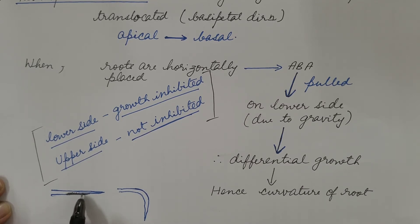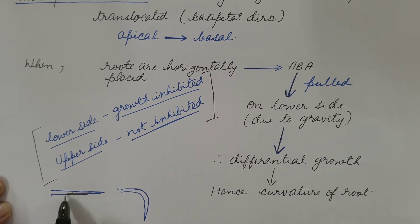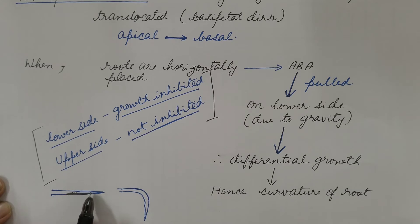Abscisic acid is pulled towards the lower side due to gravity. Abscisic acid inhibits the growth, hence growth is inhibited in the lower side, but it is not inhibited in the upper side.